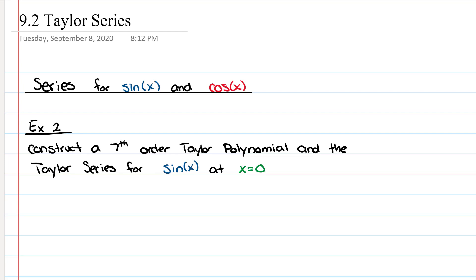In example 2, we're going to be looking at the Taylor series for sine of x and cosine of x. When your calculator computes sine and cosine of certain numbers, it doesn't actually memorize numbers or plug them into sine or cosine — it's much faster and easier for it to plug them into a polynomial.